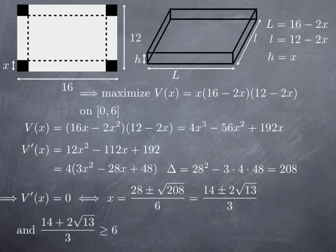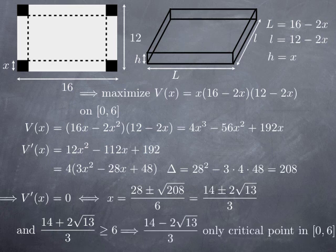Now it turns out that 14 plus 2 root of 13 over 3 is greater than 6, because root of 13 is of course greater than root of 9. So 2 root of 13 is greater than 6. So at the top I have something that is at least 20. And 20 third is greater than 18 third, which is 6. So that means that the only critical value that is inside the interval is 14 minus 2 root of 13 over 3.